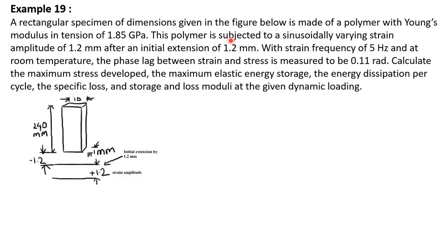The problem states that after an initial extension of 1.2 millimeter, the specimen is extended by 1.2 millimeter, and then a sinusoidally varying strain of amplitude 1.2 millimeter is applied. So from the initial extended position, the strain goes 1.2 millimeter further in the positive direction and 1.2 millimeter in the backward direction. The strain is oscillating plus 1.2 then minus 1.2, with this initial extension line as the zero reference.